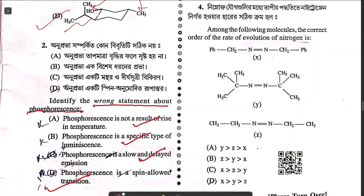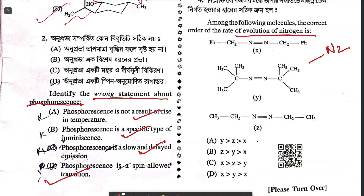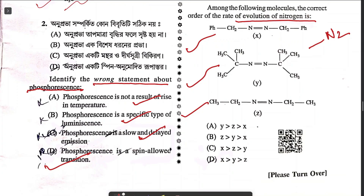Question four asks for the correct order of rate of evolution of nitrogen. The rate of N2 evolution means N2 is released, forming a carbocation. Greater the stability of the carbocation, greater the possibility of releasing N2. X will form a benzyl carbocation (highly stable), then a tertiary butyl carbocation, then a normal carbocation. The correct answer is option D.